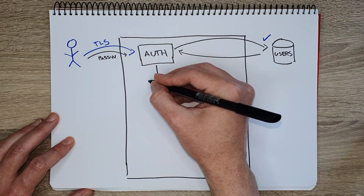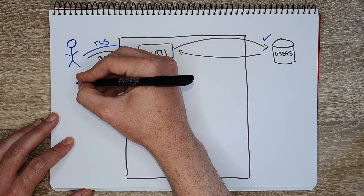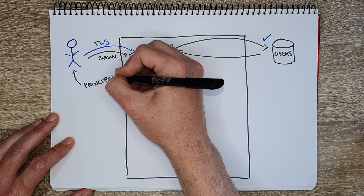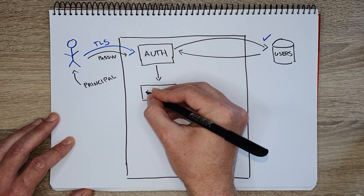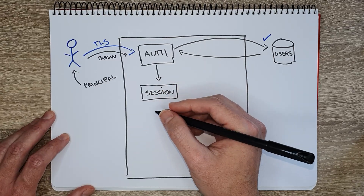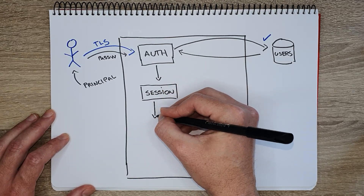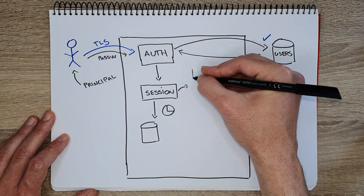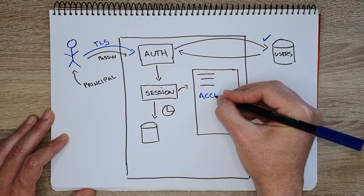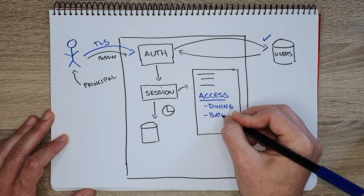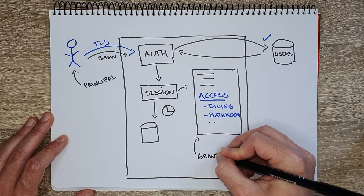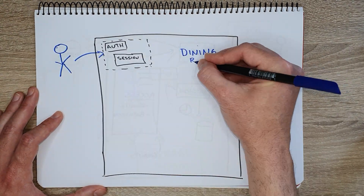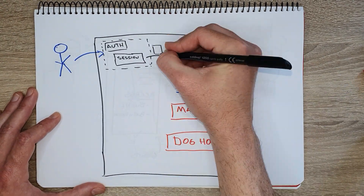In security terms, the user, or more generically, an authenticated entity, is called the principal. We can now create a session, which defines a context for the time the user is allowed to make operations inside our application. The security context contains details about the principal — who they are and what access they have. We can check the context at different layers of the application to be sure it has the right access.